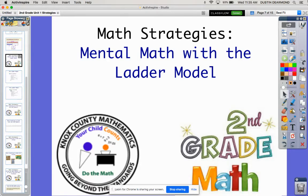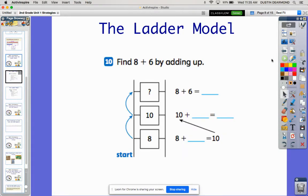In lesson three, you're using the make a ten strategy, but the book introduces you to another strategy called the ladder model. This is a visual to help you think through the make a ten strategy. The ladder model is not much different than the open number line, but instead of being horizontal, the ladder model is vertical.